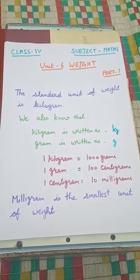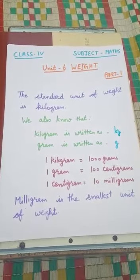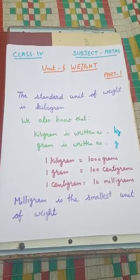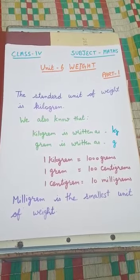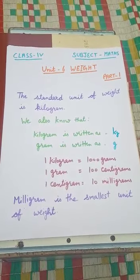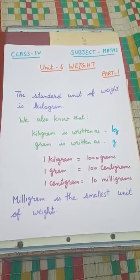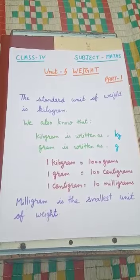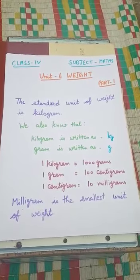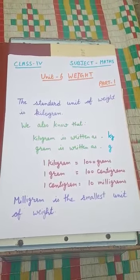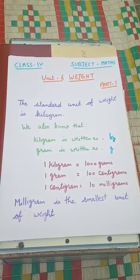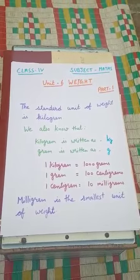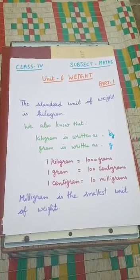As you are familiar with the topic weight, the standard unit of weight is kilogram. We also know that kilogram is written as kg, gram is written as g, and 1 kilogram is equal to 1000 grams. 1 gram is equal to 100 centigrams, and 1 centigram is equal to 10 milligrams. Milligram is the smallest unit of weight.